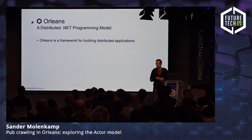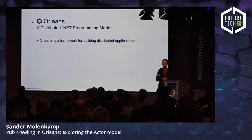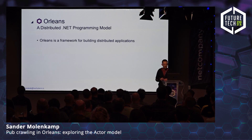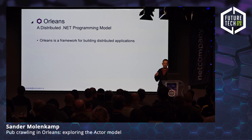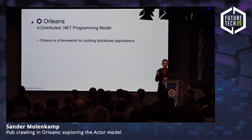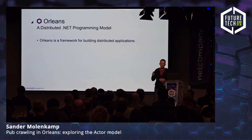Orleans has been used in large services — some Azure services use it internally. You may also know it from Halo 4 and Halo 5; some parts of those games use it internally. Recently the team has become part of the .NET team, which is giving Orleans a new push as a distributed platform. They also bumped the version number — the older version was 3.x and now they bumped it to 7 to align with .NET versioning.